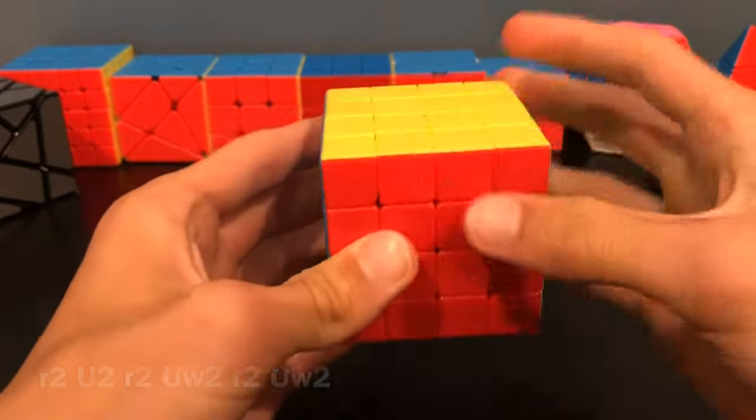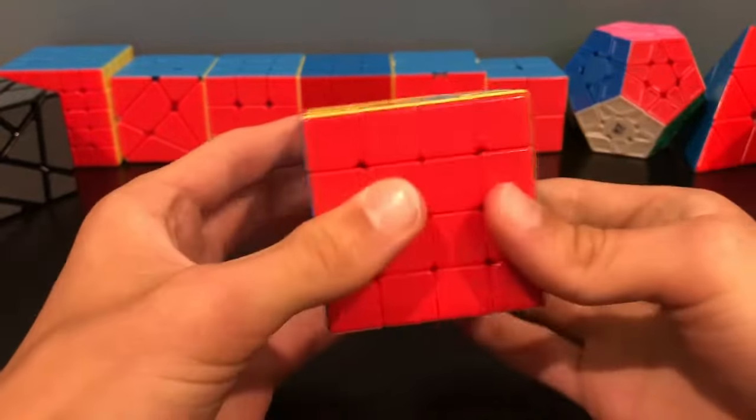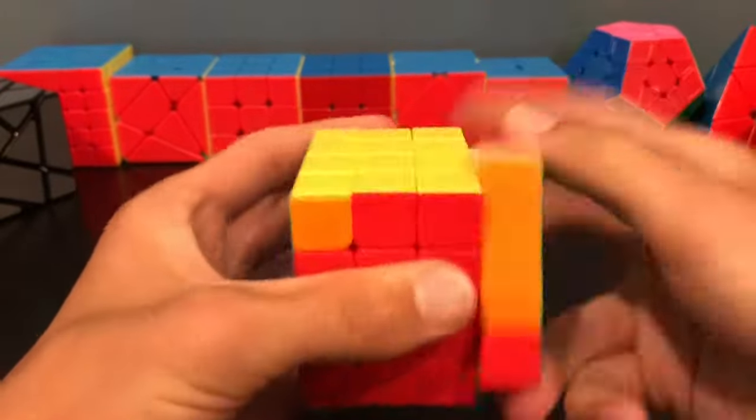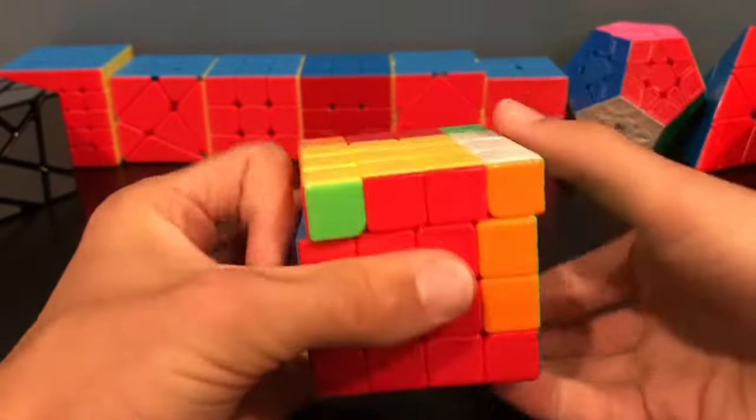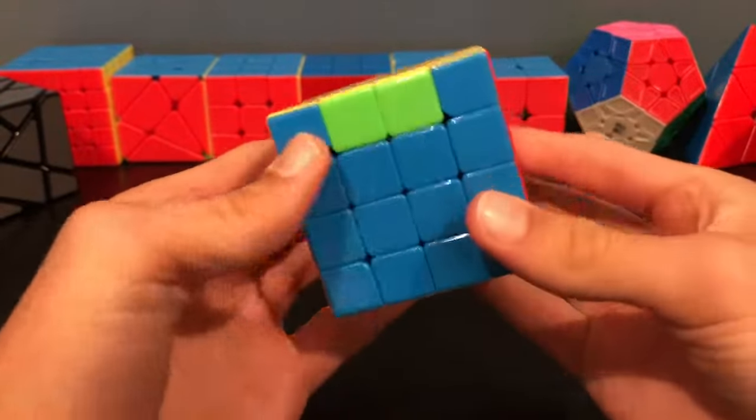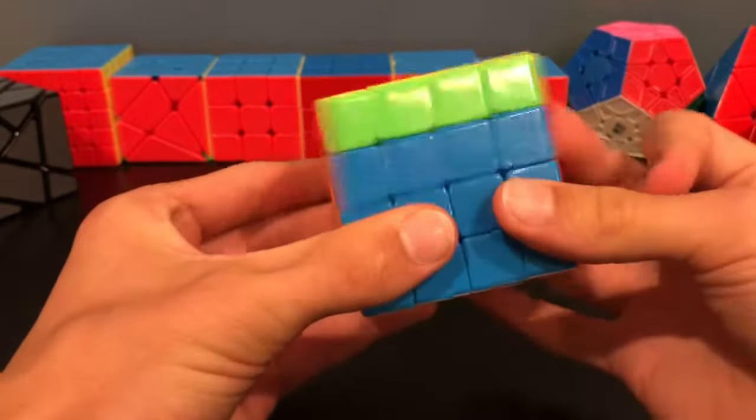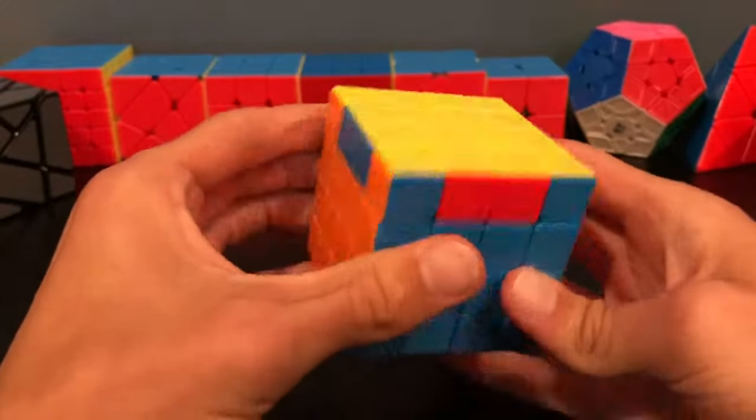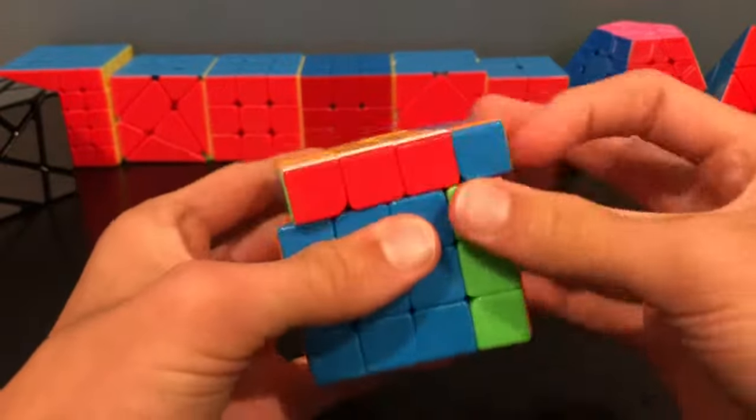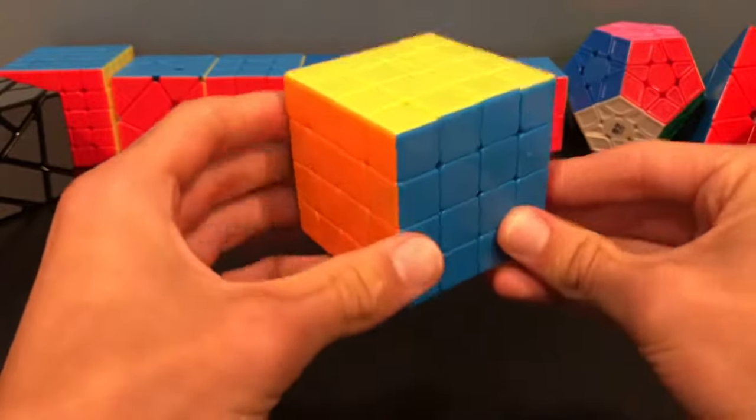What this does is it flips the edge in front of you with the edge behind you. Even if you had a case that didn't look exactly like two edges that need to be swapped, maybe you had something like this, all four of these, still, by doing this algorithm you'll just fall back into a case you've seen, like this is a U perm, and then you can just solve it like a 3x3 or whatever method you use to solve it, and then you're done.